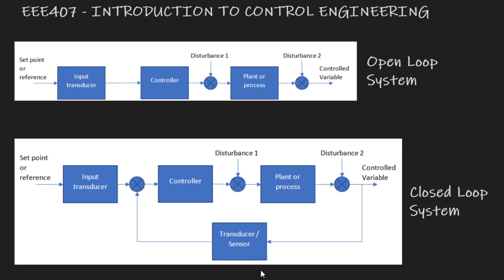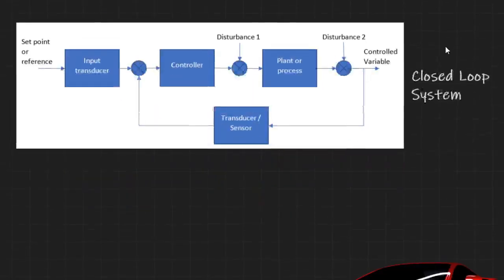Even though this is the typical diagram of a closed-loop system, your controller does not have to be in the forward path — it could be in the feedback path, though we won't deal with any system like that in this course. Mostly we just have a controller in the forward path. To make sure we understand this, we'll go ahead and work through an example.